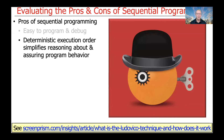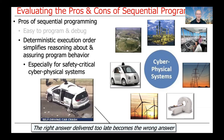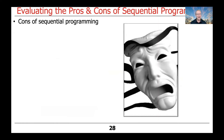Another benefit of sequential programming is that the deterministic execution order simplifies reasoning about and assuring the behavior of the program. This is especially important for safety-critical cyber-physical systems — systems where the right answer delivered too late becomes the wrong answer. Think about things like self-driving cars, power grids, medical devices, air traffic control systems, and airplanes.